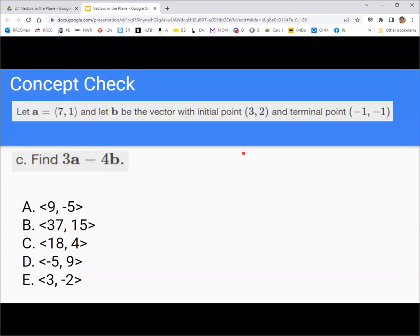All right, putting all that together, here's one last problem for you to try out. Given that a is 7, 1, and b has initial point 3, 2, and terminal point negative 1, negative 1, find 3a minus 4b. Go ahead and pause this, take a few minutes to find the answer to that, and then unpause when you're ready. All right, so you should have gotten that the answer is b, first component 37, second component 15.